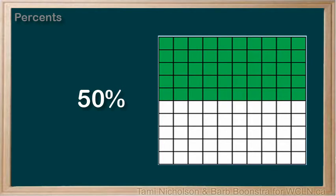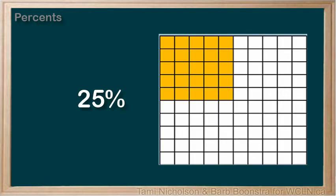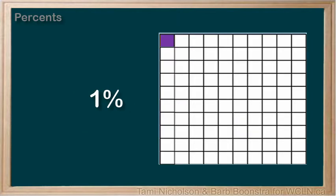You can also think about 50% as one half. This is 25% — this would be 25 parts out of 100 parts. You can also think about this as one quarter. This is one percent, which would be one part out of 100 parts. This is a fairly small percent.